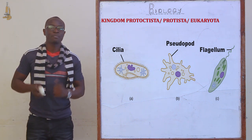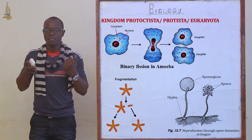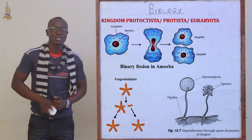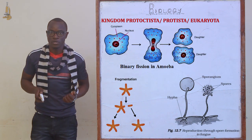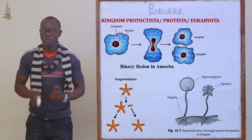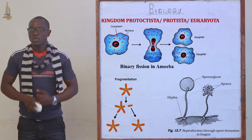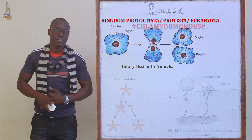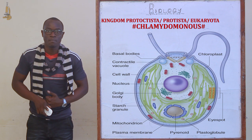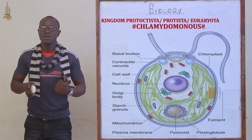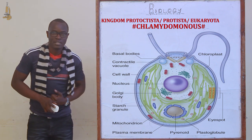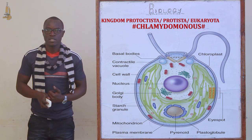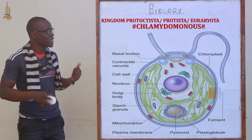They reproduce asexually by either fission, fragmentation, or sporulation. Now let's look at the first organism under this kingdom, which is a single-cell algae referred to as Chlamydomonas.